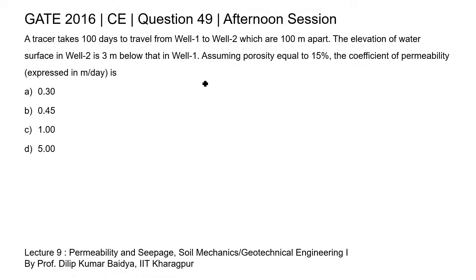This is question 49 of the civil engineering paper of GATE 2016 afternoon session. A tracer takes 100 days to travel from well 1 to well 2, which are 100 meters apart. The elevation of the water surface in well 2 is 3 meters below that in well 1.